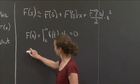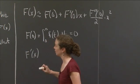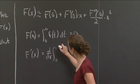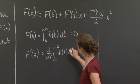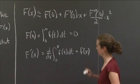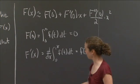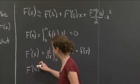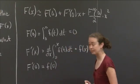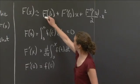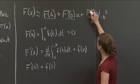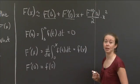Now let's figure out what capital F prime is. Capital F prime of x, we know, using the Fundamental Theorem of Calculus, is just little f of x. So if I wanted capital F prime at 0, that's just going to be little f at 0. So we've filled in the first two pieces — capital F of 0 is 0, and capital F prime of 0 is little f of 0. Now all we need is capital F double prime evaluated at x equals 0.